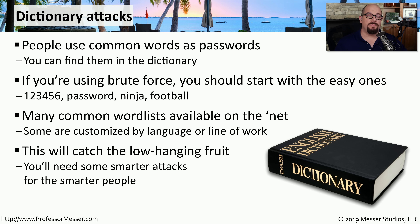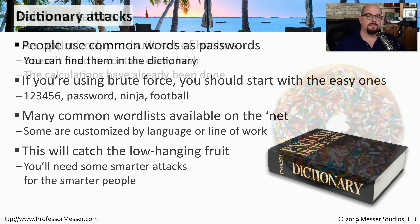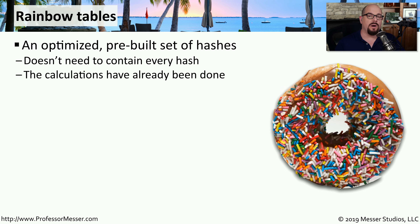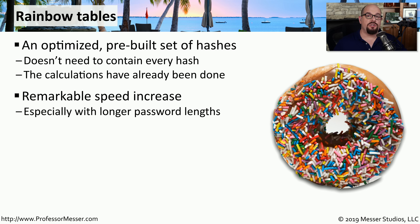If a user's password happens to be a combination of letters and numbers, then it may take a traditional brute force process to determine what that password is. Instead of using the computational resources required to perform a brute force in real time, what if you save the results of every possibility that a password might be? This large set of results is called a rainbow table. This rainbow table is one that you can create one time, and now to find someone's password, you simply search for the hash that you've already calculated. This means you can perform a simple search through a database and find extremely complex passwords in just a few seconds.